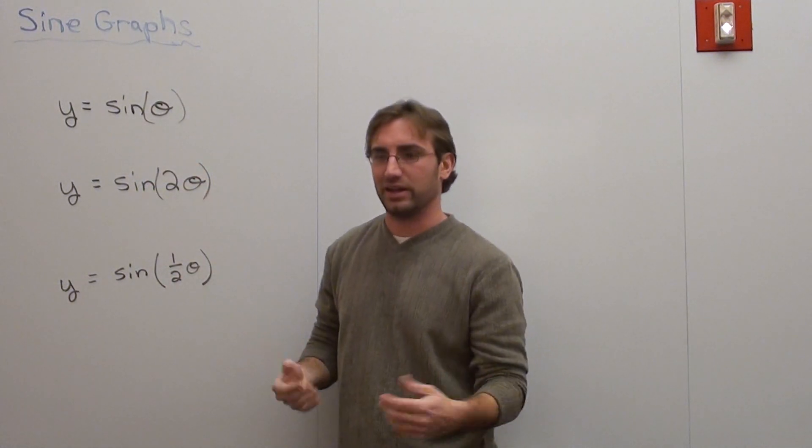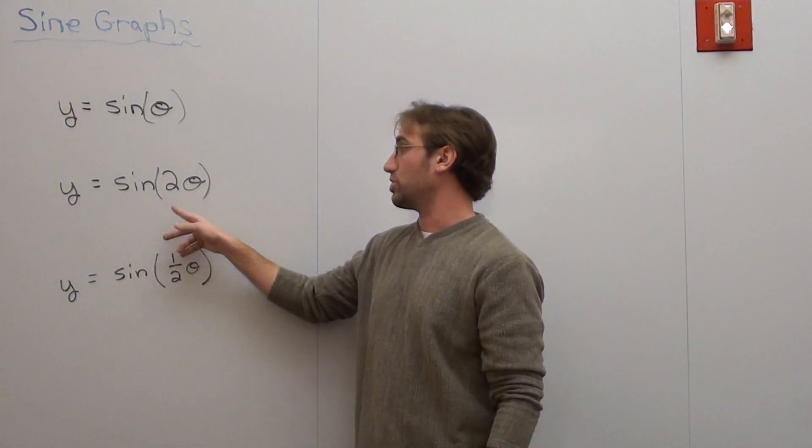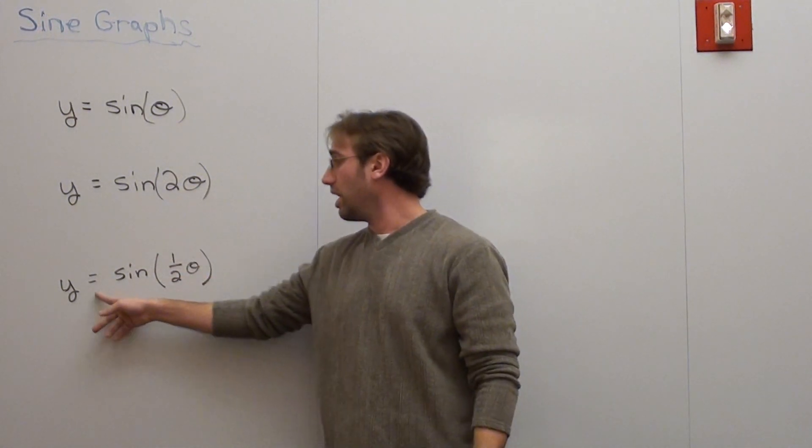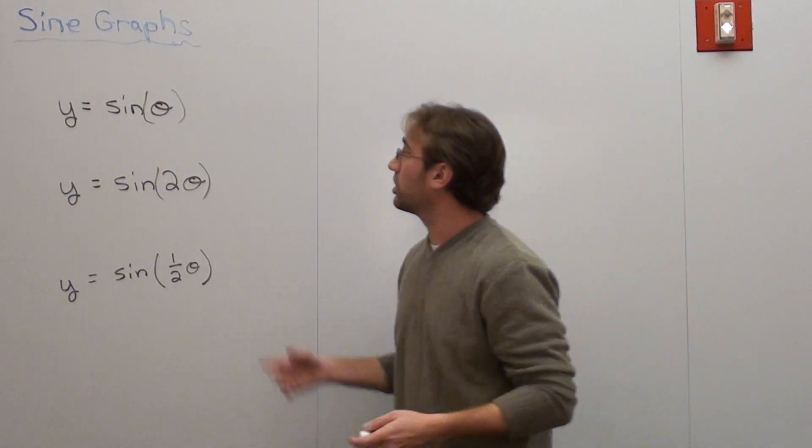But it's more proper to put in theta—we're doing an angle measure, not an x value. Y equals sine of 2 theta, which means twice the angle, and y equals sine of 1 half theta. What's really cool is when you look at these graphs.